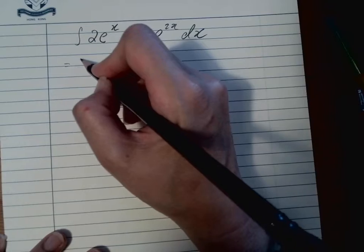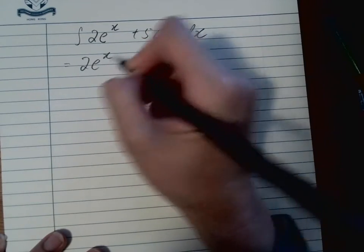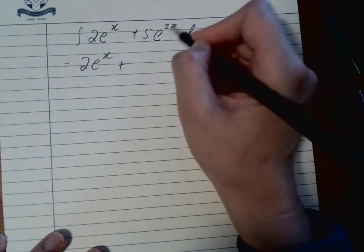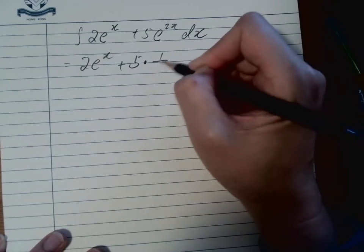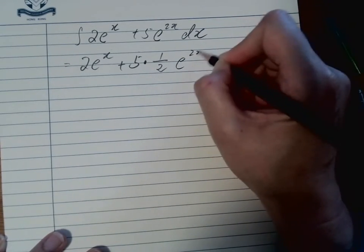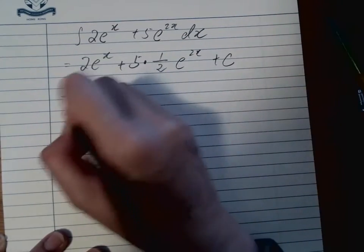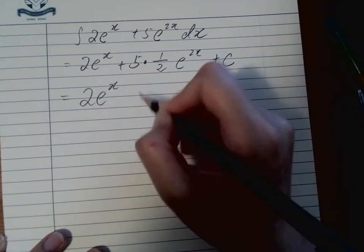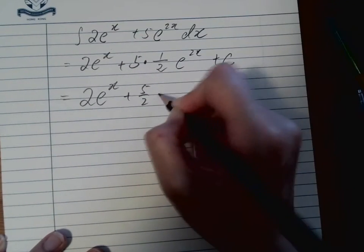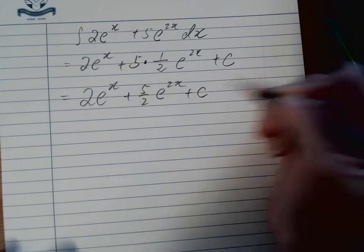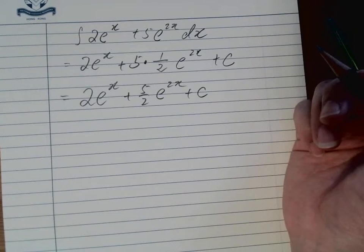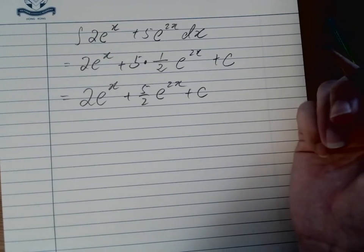The first one is simple, so we give it the e^x plus, this is a coefficient here, so we have 5 times 1 over 2, and then copy whatever it is. Make sure you plus c. So you have 2e^x plus 5 over 2 e^(2x) plus c. And that's how we do that with e^x.